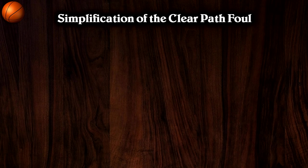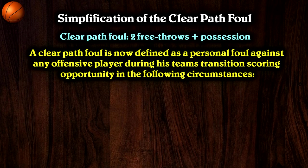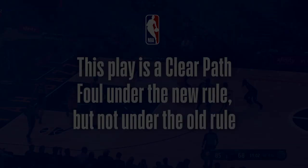The second rule change is a bit complicated — it's the simplification of the clear path foul rule. For those who don't know what a clear path foul is, you basically get two free throws and possession of the ball if a defender fouls you from behind in transition. The new rule change now states that a clear path foul is defined as a personal foul against any offensive player during his team's transition scoring opportunity in the following circumstances: the ball is ahead of the tip of the circle in the backcourt, no defender is ahead of the offensive player with the transition scoring opportunity, the player with the transition scoring opportunity is in control of the ball, and the foul deprives his team of an opportunity to score. Here's a video clip as an example.